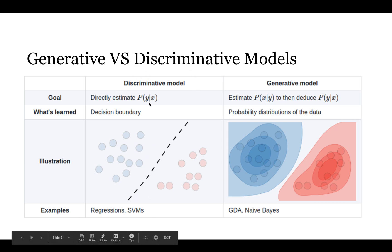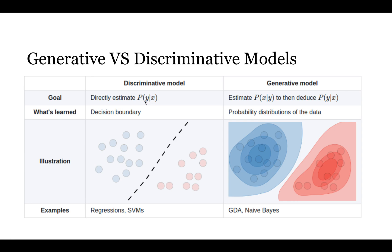The goal of the discriminative model is to directly estimate P(Y|X) — the probability of Y given X. For the generative model, it estimates P(X|Y) and then deduces P(Y|X). In another way, the discriminative model learns the decision boundary between classes.